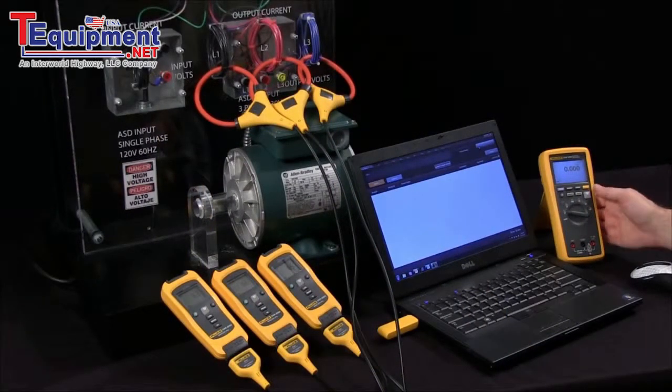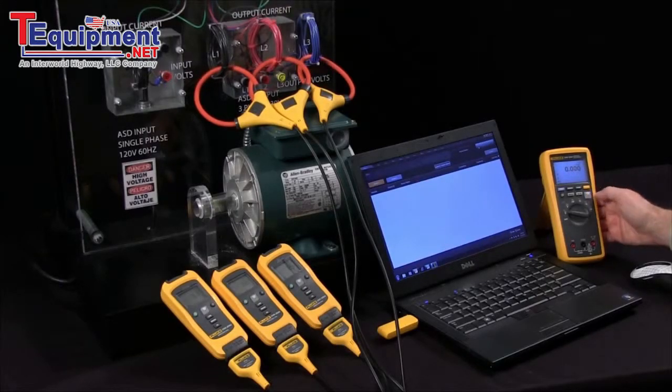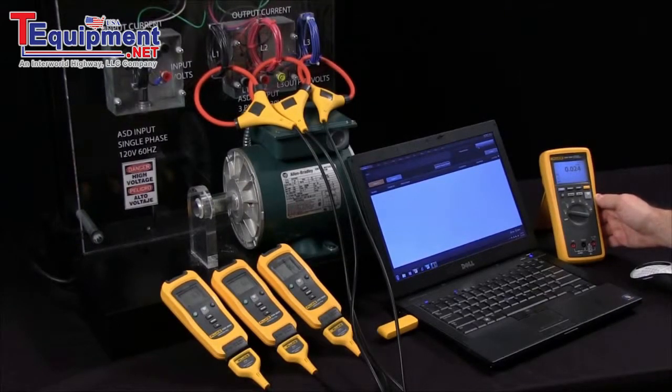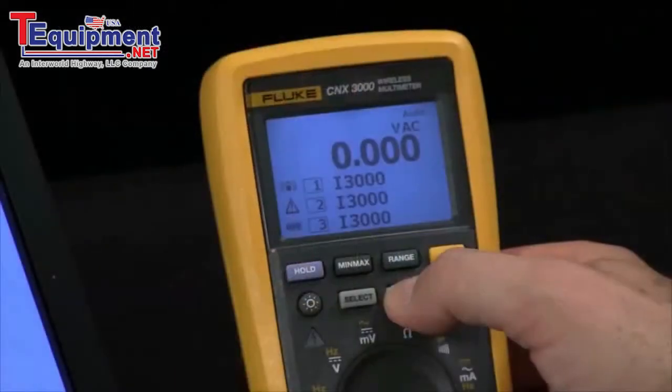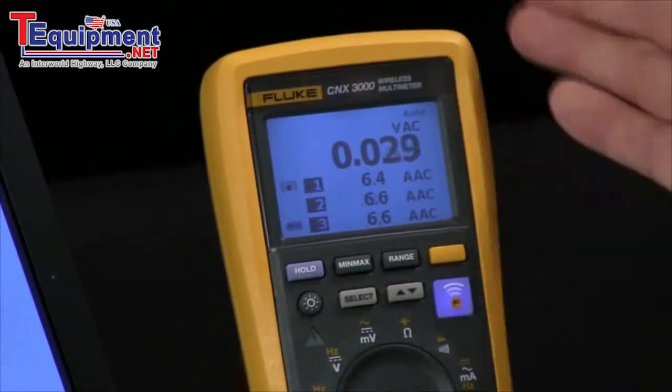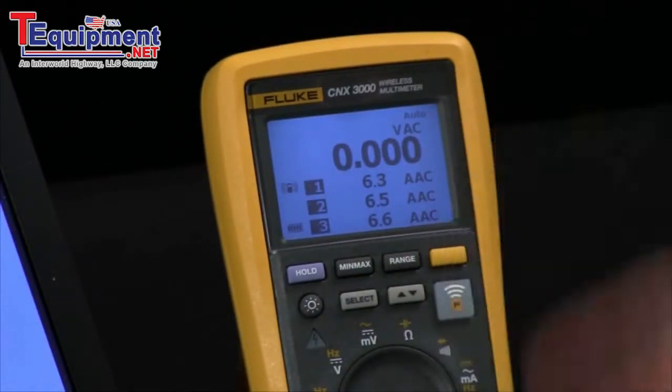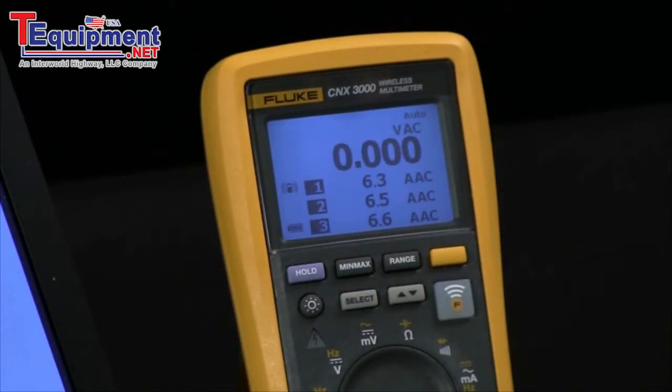Alternately, what I can do is turn on the receive button of my CNX3000 digital multimeter and it will go out and detect my modules. Now we can display the readings from each of those respective modules on the screen of the multimeter. You see there are my readings right there: 6.4, 6.5, and 6.6 amps.